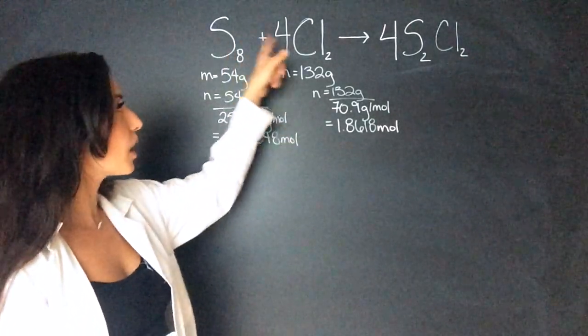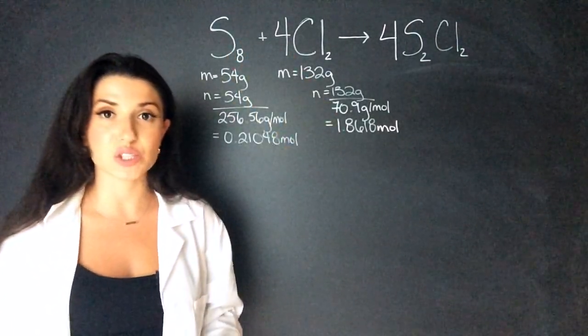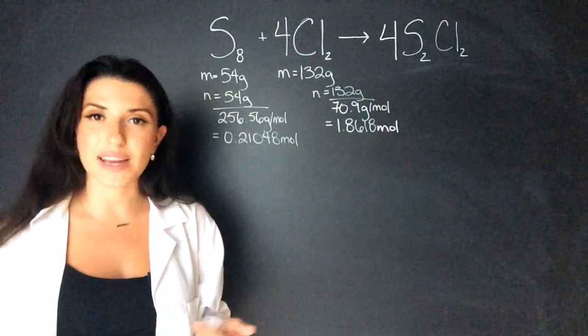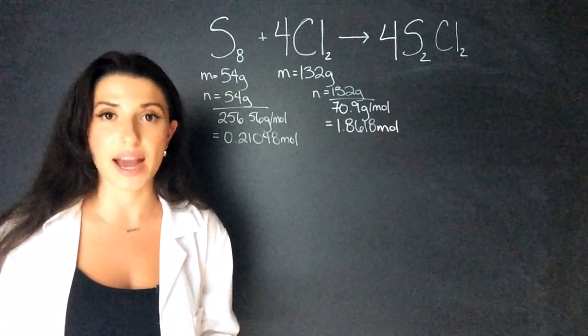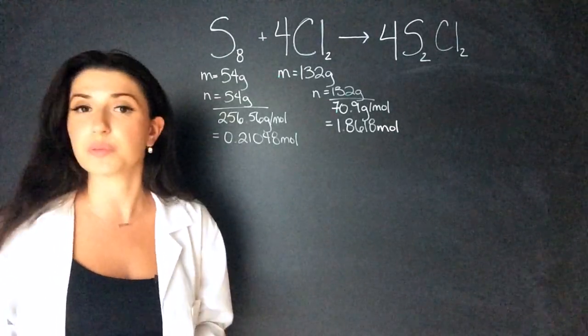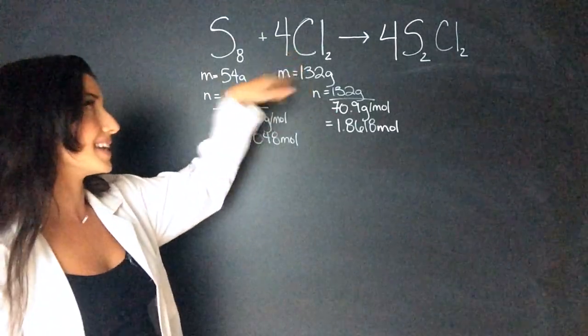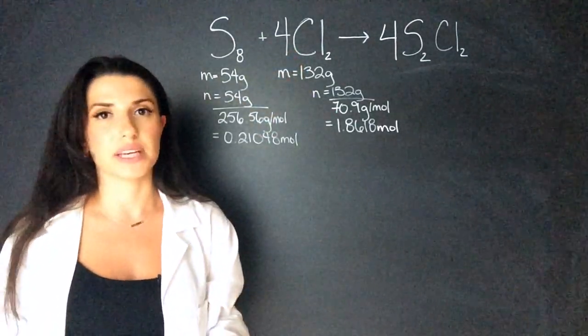Remember, if the stoichiometry coefficients on the reactants were ones, I could just compare the moles and whichever one has less moles would be my limiting reactant. And whichever one has more moles would be my excess reactant. However, this doesn't have that. So we have to find the limiting reagent first.